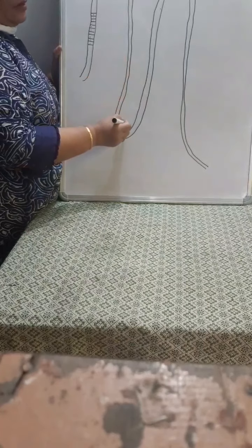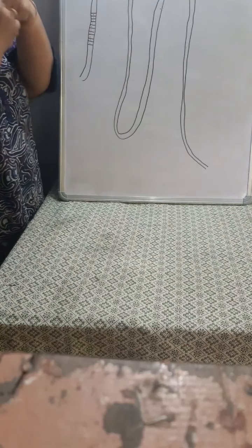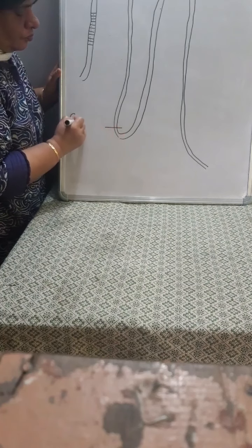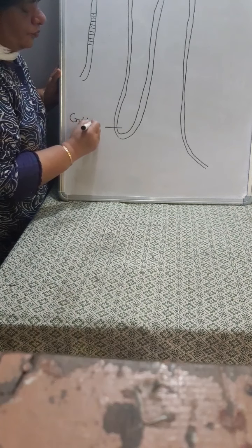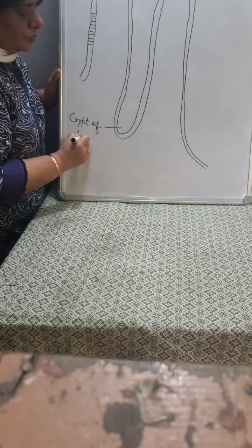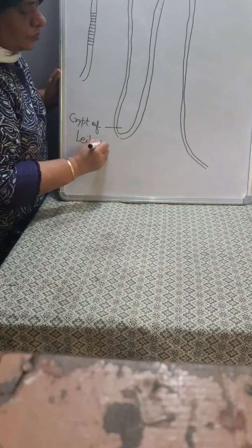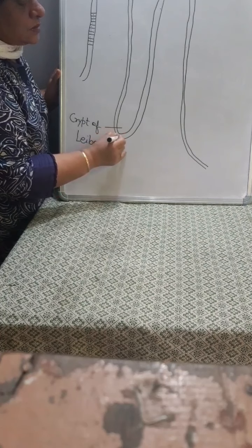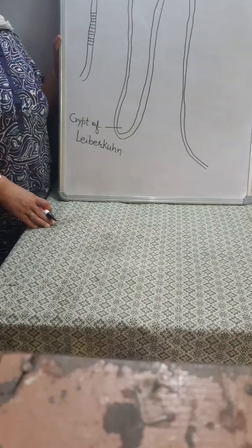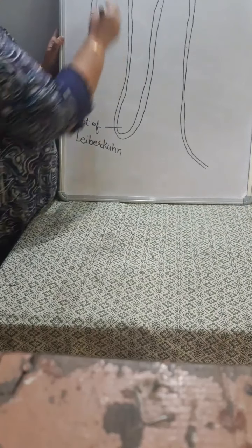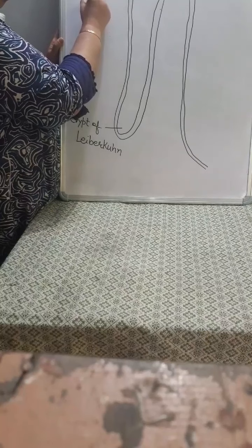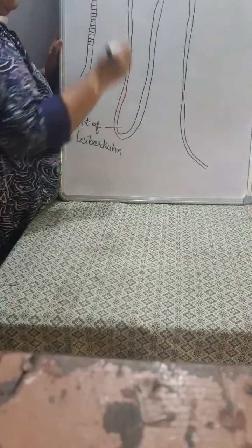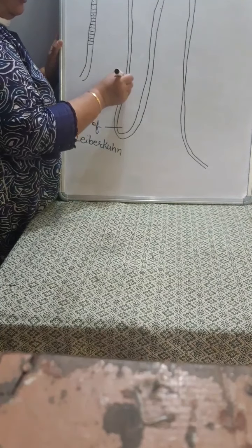When the villi fold inward, this is called the crypt of Lieberkühn. These are the glands, and these glands are mostly found in the duodenum.